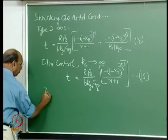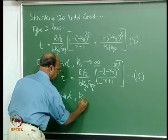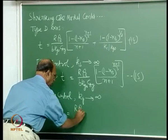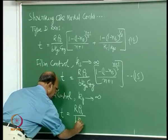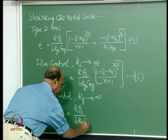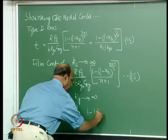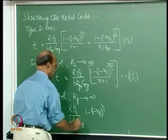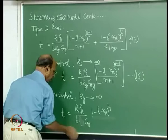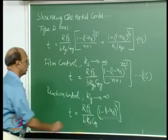If I have reaction control, then we know that K_g is very large. Then the equation becomes T equal to R·rho_B over b·K_s·C_Ag, with only the term 1 minus X_B to the power of 1/3 remaining, divided by K_s. This is equation 16.